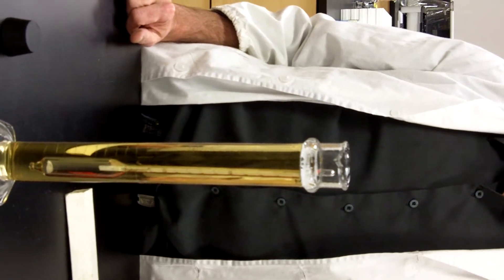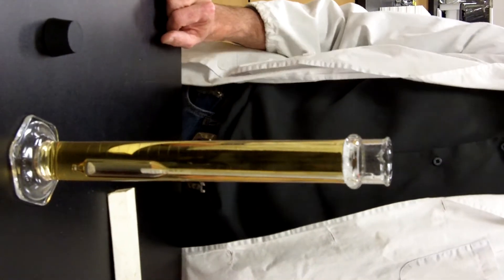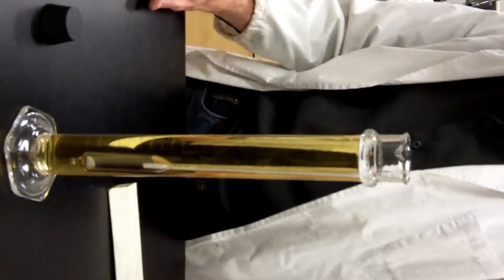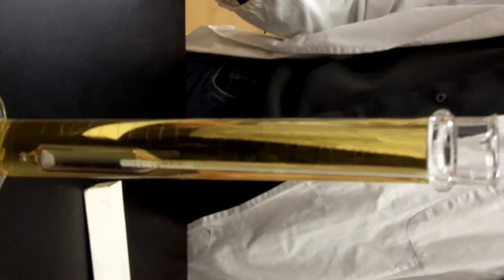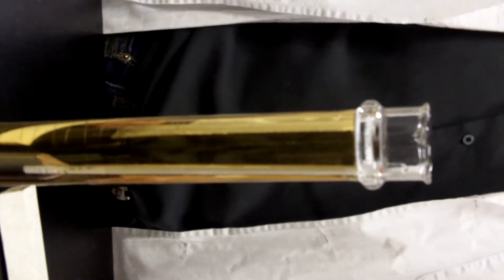And then what you do is you wait for it to stabilize. And you'll read off the specific gravity from the scale, which is on the side of the hydrometer. So you can read that and record the results.